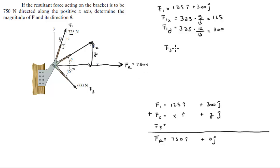And F3 has an X component and a Y component as well. You can see the magnitude is 600 and cosine of 45 will be the X component, and the Y component is negative because it's going down, 600 sine of 45. This comes out to be 424.3i minus 424.3j.